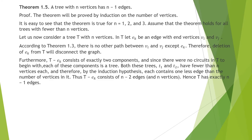Theorem: a tree with n vertices has n minus 1 edges. The proof is done by induction on the number of vertices. It is easy to see that the theorem is true for n equal to 1, 2, and 3. Assume that the theorem holds for all trees with fewer than n vertices.